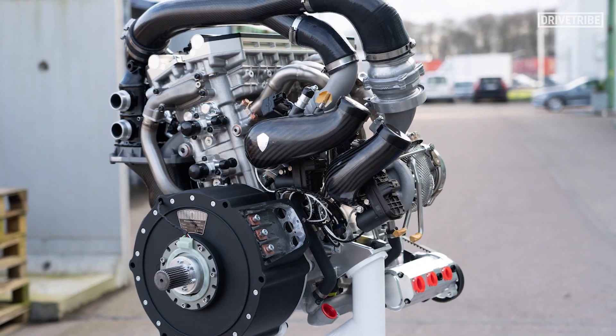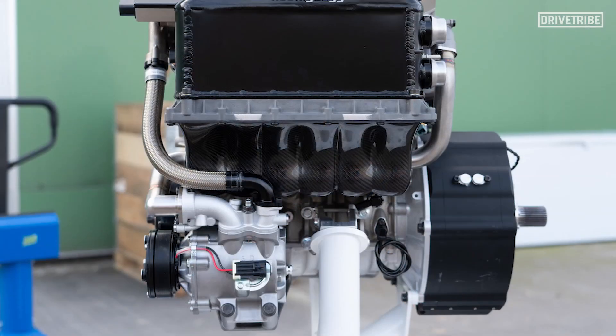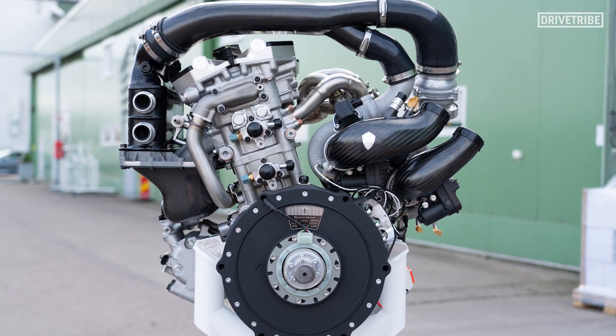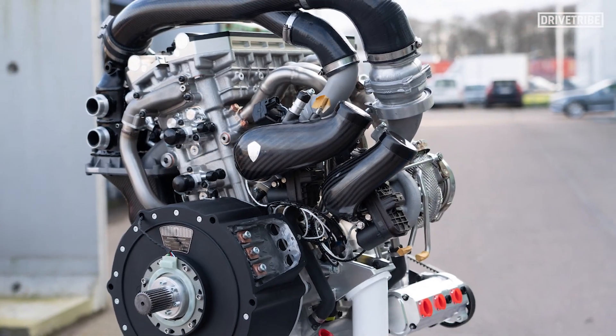Most three-cylinder engines these days, even when you slap a turbo on them, create around 200 brake horsepower. So how the hell has Koenigsegg got triple that figure from such a tiny engine? Well, there's two reasons, and the second reason is definitely the coolest, but let's start with the first reason.